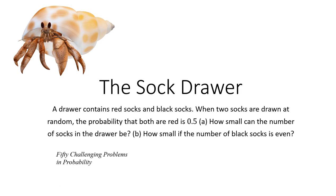So basically, what we want to introduce today is the sock drawer. The sock drawer contains red socks and black socks, and when two socks are drawn at random, the probability that both are red is 0.5. I want to ask: how small can the number of socks in the drawer be? And how small if the number of black socks is even?